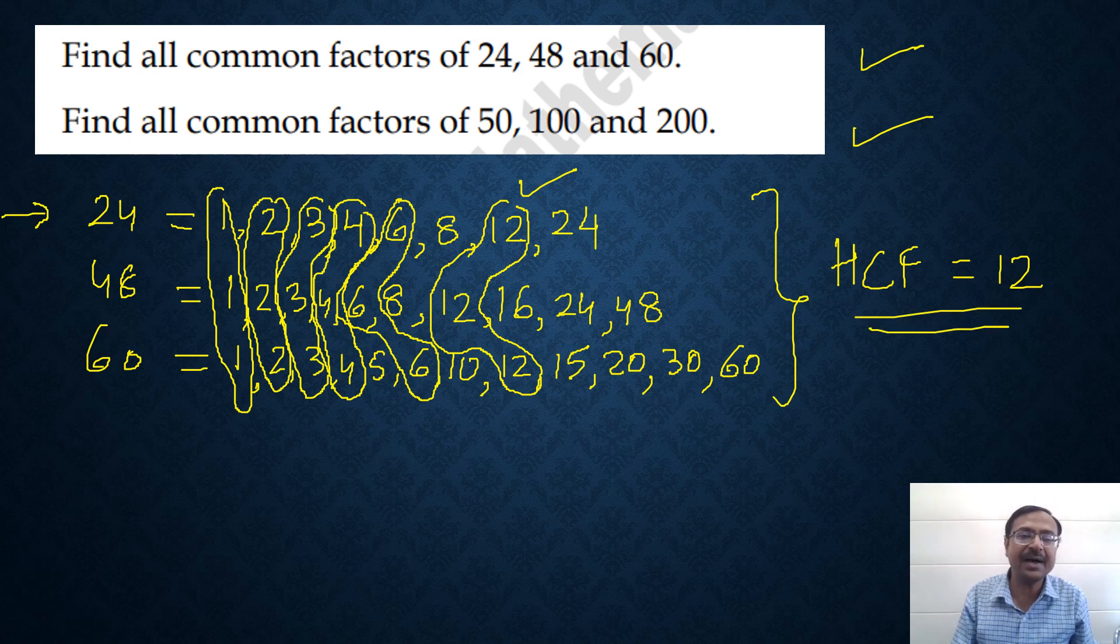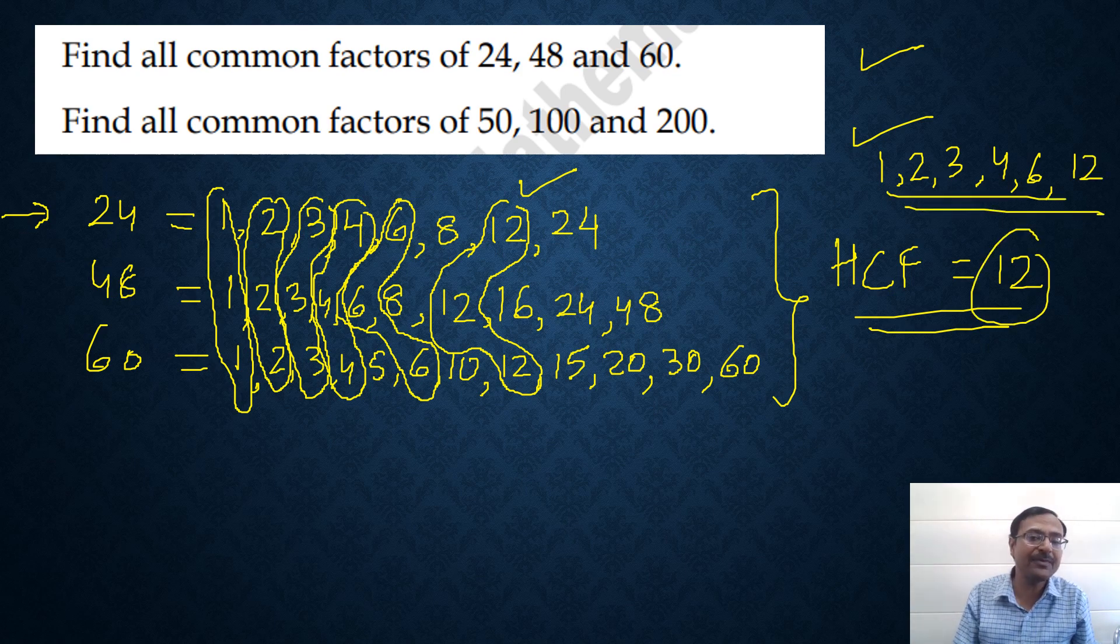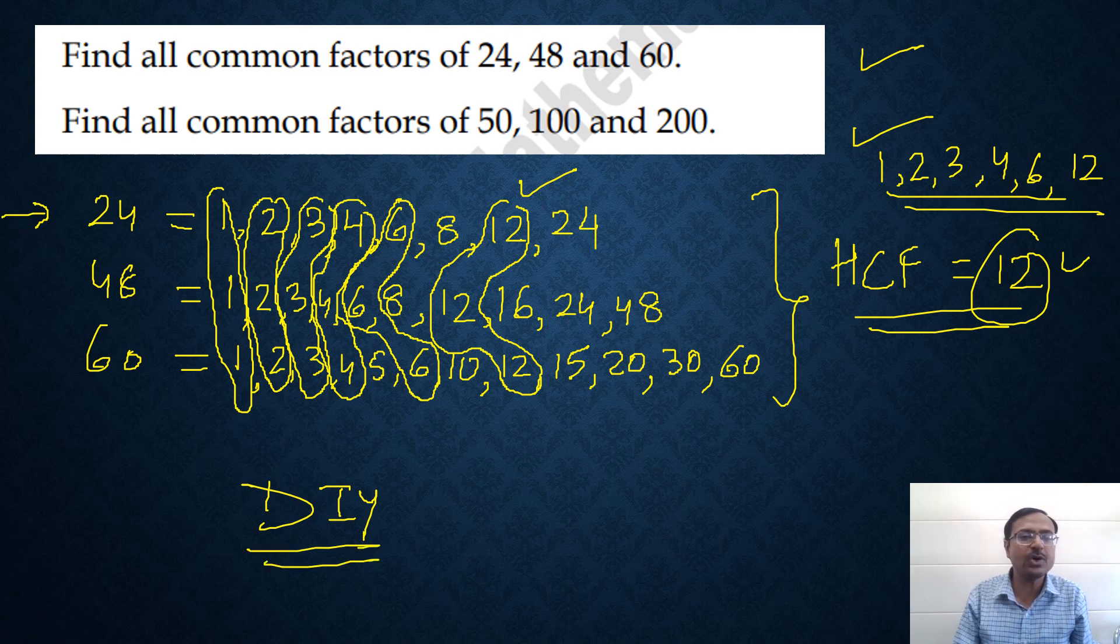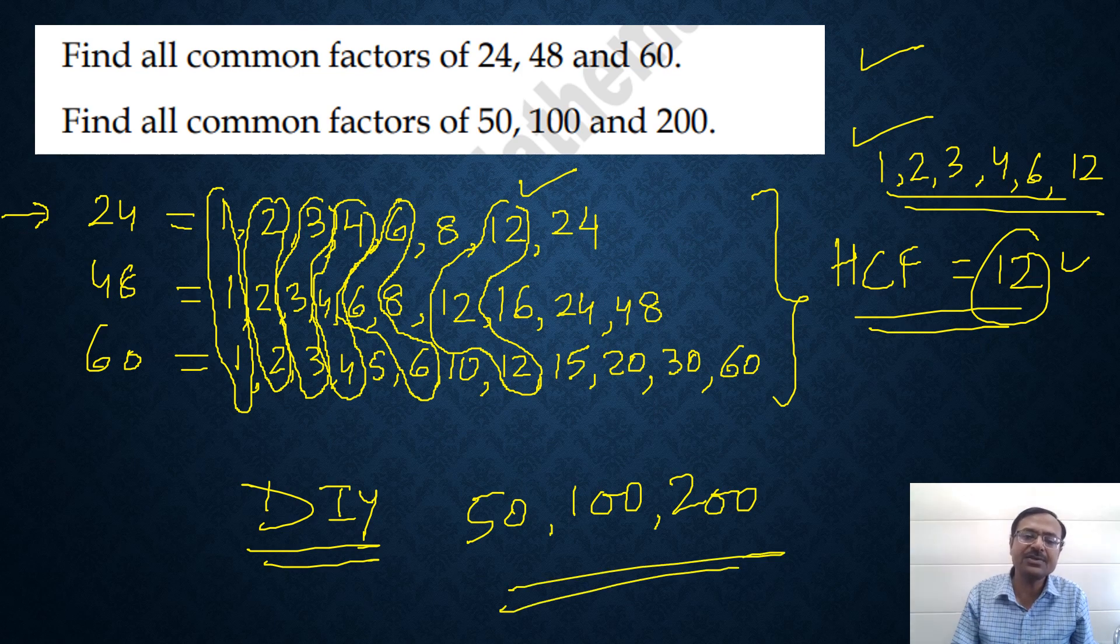So the common factors are 1, 2, 3, 4, 6 and 12. They are all common factors but the highest common factor is 12. So the HCF of 24, 48 and 60 is 12. Likewise, I leave this question as a DIY for you, do it yourself: 50, 100 and 200. Try to make all the factors of 50, all factors of 100, all factors of 200 and then find the HCF. That's for you. You can post your comments in the comment box below so that I know you are following and trying to solve all those questions.